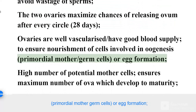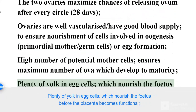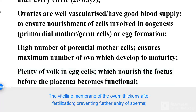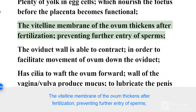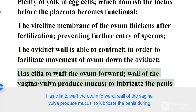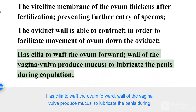Primordial mother germ cells are involved in egg formation (oogenesis). A high number of potential mother cells ensures the maximum number of ova develop to maturity. Plenty of yolk in egg cells nourishes the fetus before the placenta becomes functional. The vitelline membrane of the ovum thickens after fertilization, preventing further entry of sperms. The oviduct wall contracts to facilitate movement of the ovum and has cilia to waft the ovum forward.